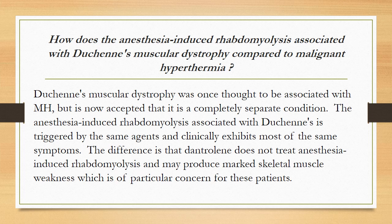How does anesthesia-induced rhabdomyolysis associated with Duchenne's muscular dystrophy compare to malignant hyperthermia? Duchenne's muscular dystrophy was once thought to be associated with malignant hyperthermia but is now accepted as a completely separate condition. It is triggered by the same agents and clinically exhibits most of the same symptoms. The difference is that dantrolene does not treat anesthesia-induced rhabdomyolysis and may produce marked skeletal muscle weakness, which is a particular concern for these patients.